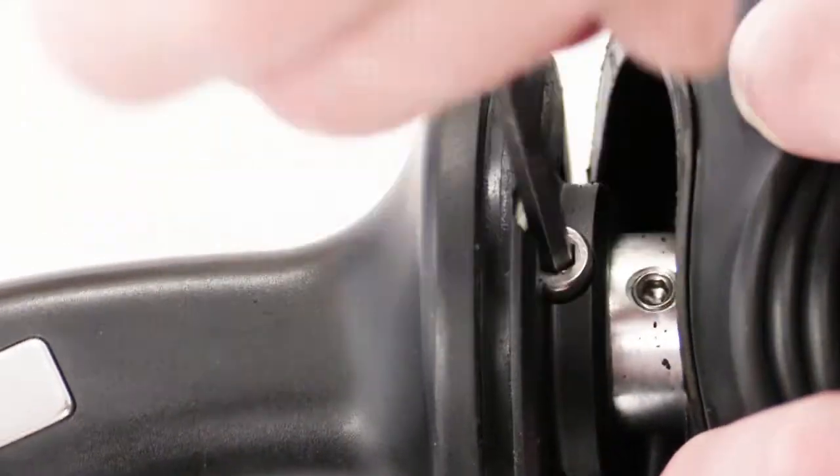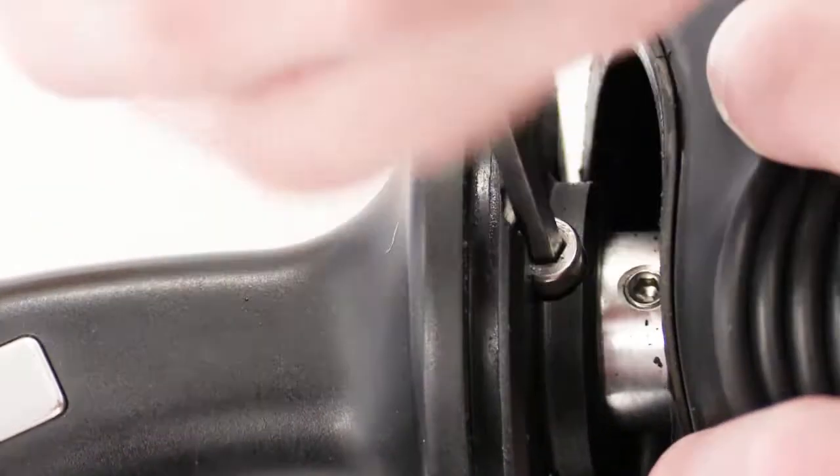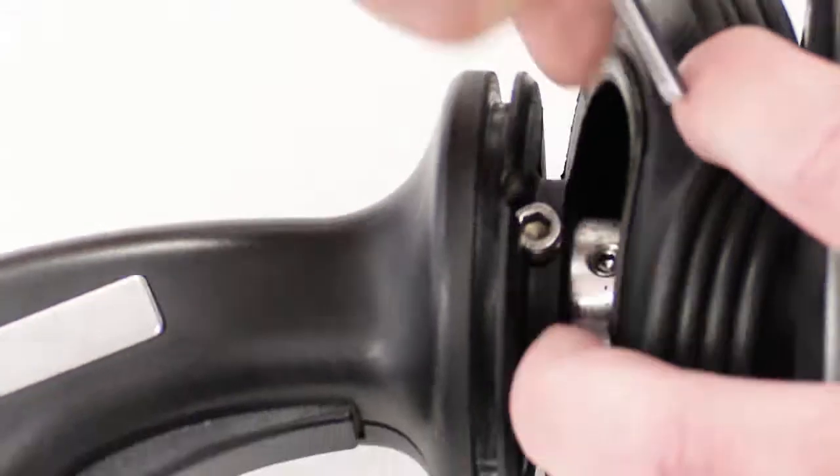As previously stated, remove the two Allen bolts that are secured in the bottom part of the housing to the base of the joystick.